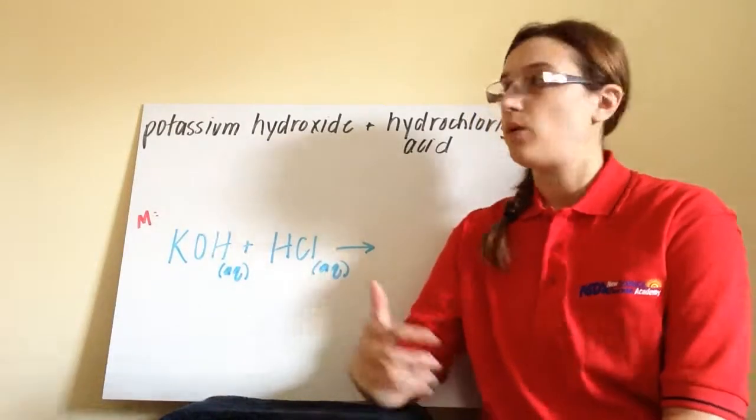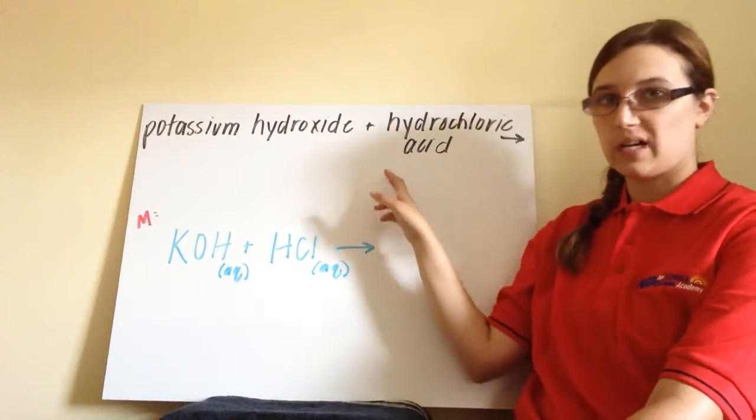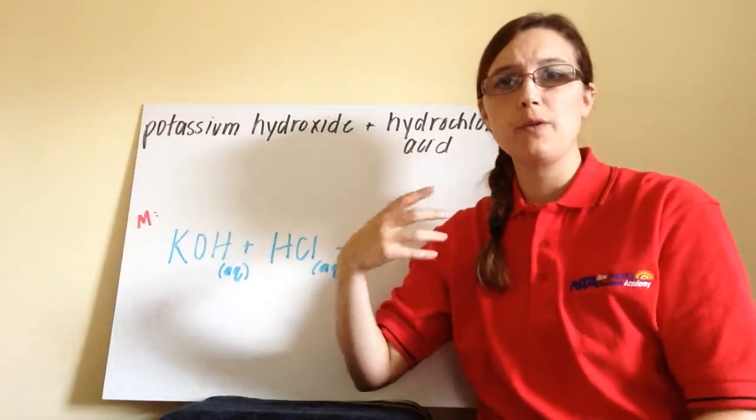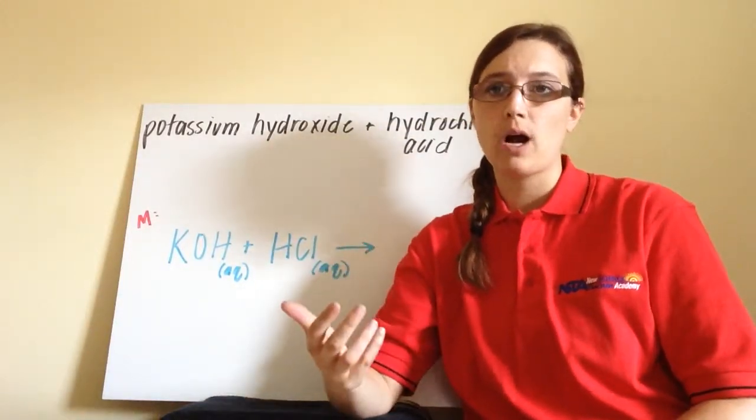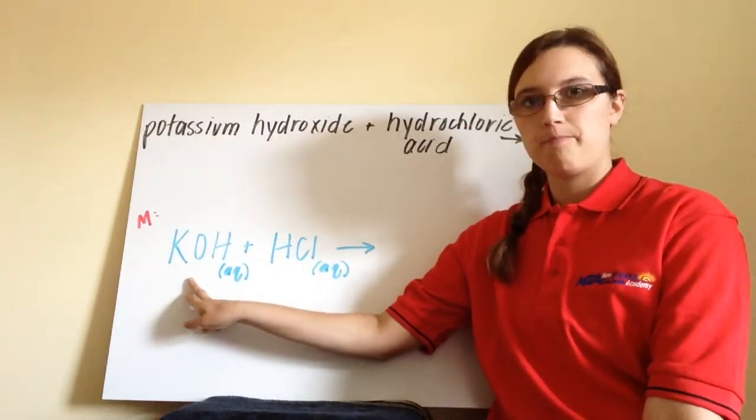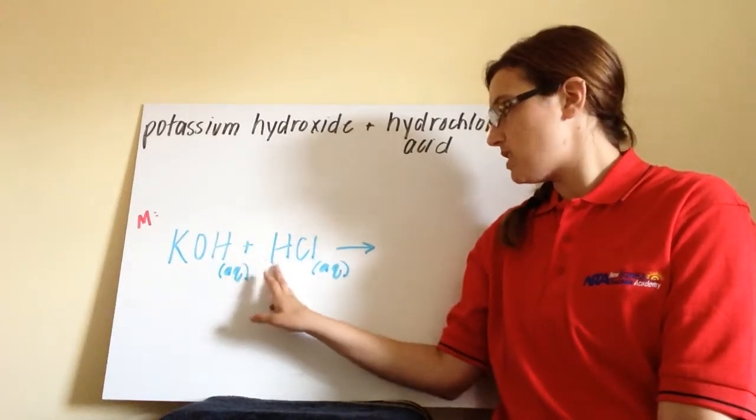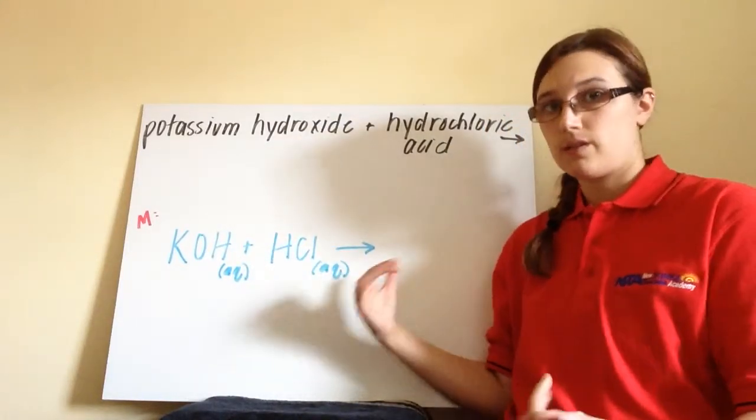So for this chemical reaction, we have potassium hydroxide added to hydrochloric acid. Remember, the first thing we have to do if we're given a word problem is put it into symbols. So what we have down here is KOH, it's 1 and 1, plus 1, minus 1. KOH plus HCl yields what?